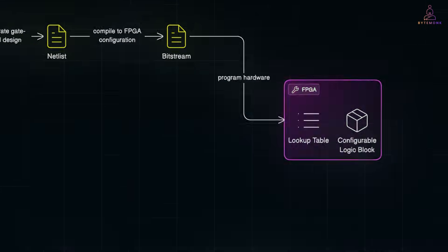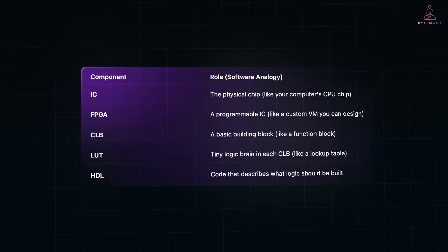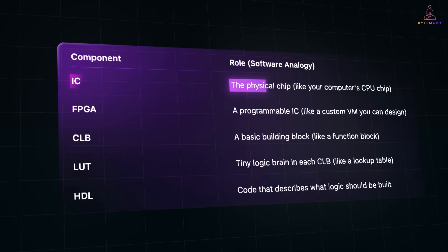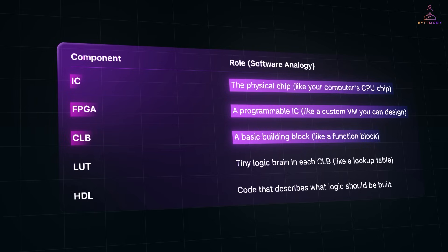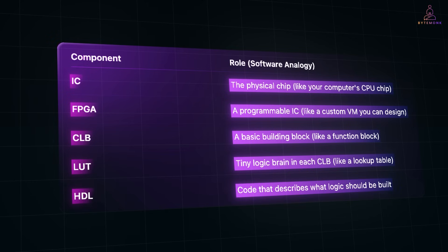Here is how it all fits together: an IC or integrated circuit is the physical chip, like a computer CPU chip. An FPGA is the programmable IC — like a custom VM you can design. A CLB is the basic building block, like a function block. A LUT is the tiny logic brain in each CLB. And HDL is the code that describes what logic should be built.